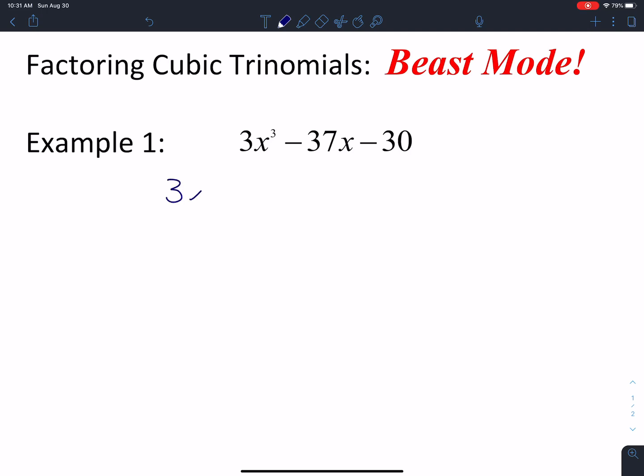So as you recall, we write the 3x³ here. We're going to break the 37 into two parts, and then we're going to put a 30 over on the other side. Keep in mind that the difference of squares is going to occur on the left side.